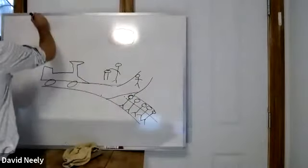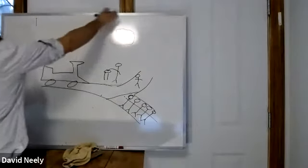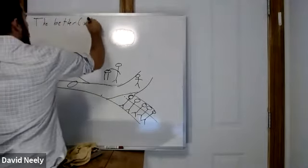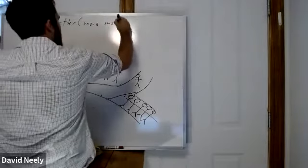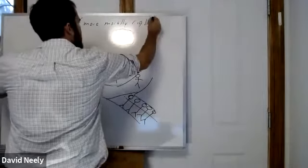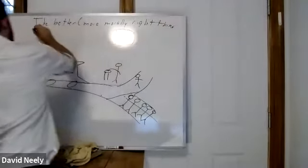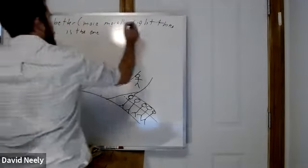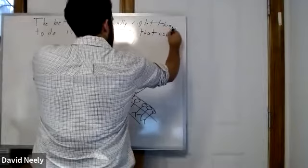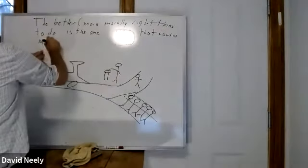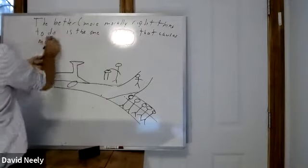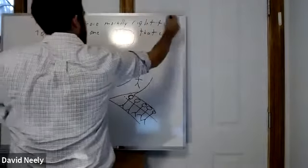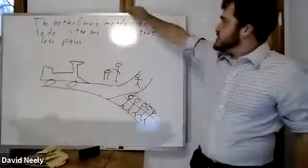So here's our rule: the more morally right thing to do is the one that causes less pain. What we've done here is basic ethics — we start with this situation, think about what we would do and why, and then come up with a general principle that can be applied in other cases.